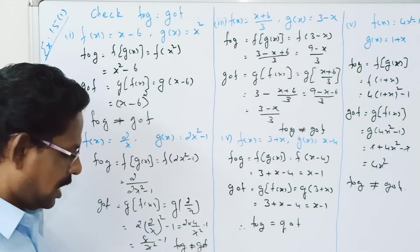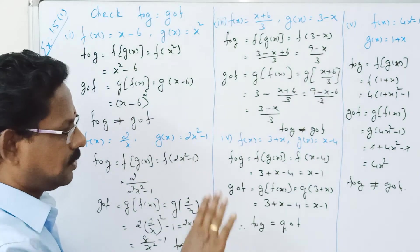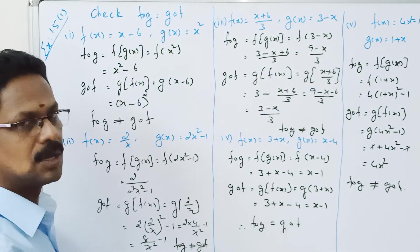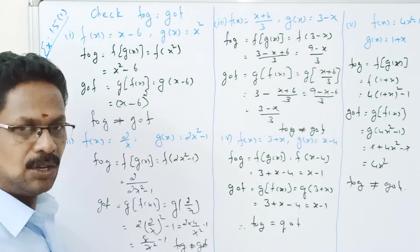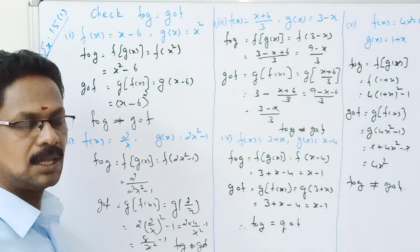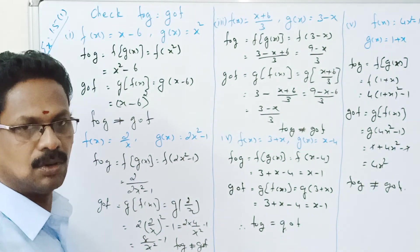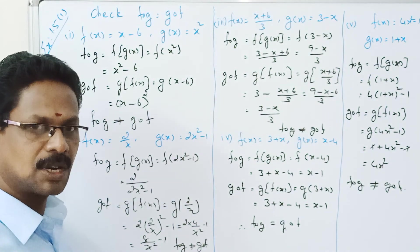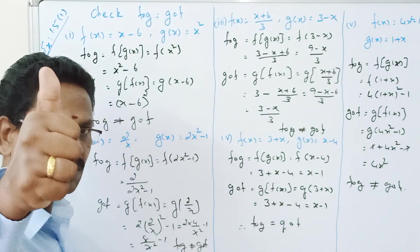Out of 5 sums, the 4th sum gave F composition G equal to G composition F, and the rest were not equal. Study well, subscribe, and press the bell icon.